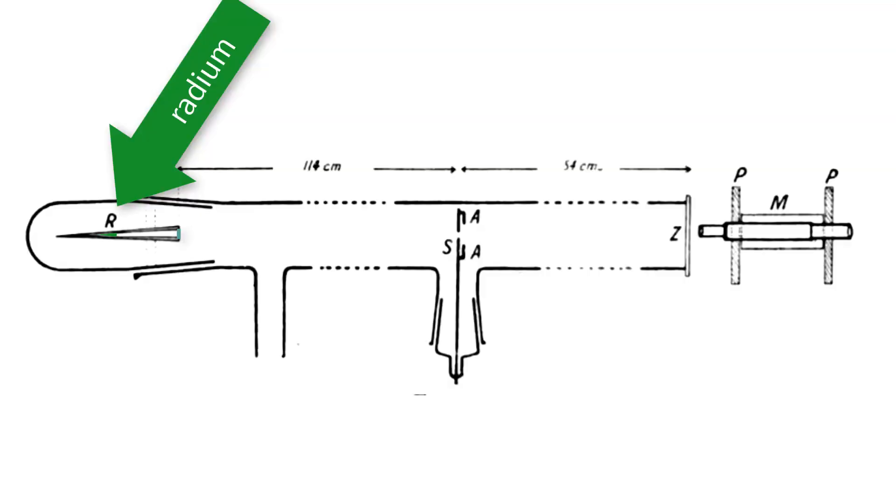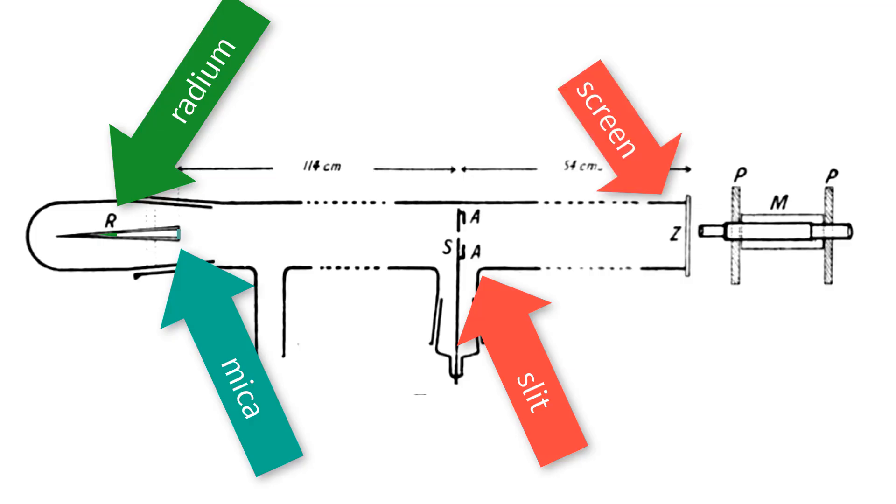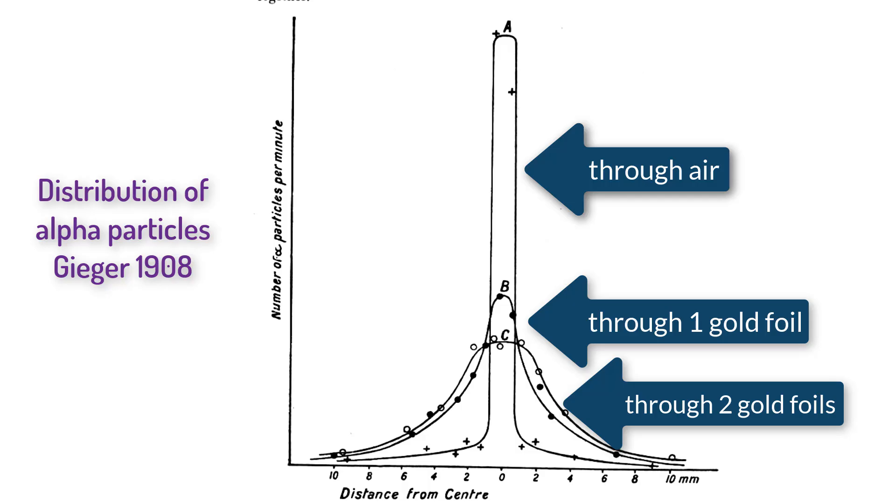Geiger thus put radium in a small lead evacuated cone, where one end was covered in thin mica that let the alpha particles escape. He then had the beam of particles go through a small slit that could be covered with foil, and then examine the alpha particles that hit a phosphorescent screen with a microscope that could be moved up or down. In this way, Geiger produced smooth curves of the position of the alpha particle diverted by thin metals.